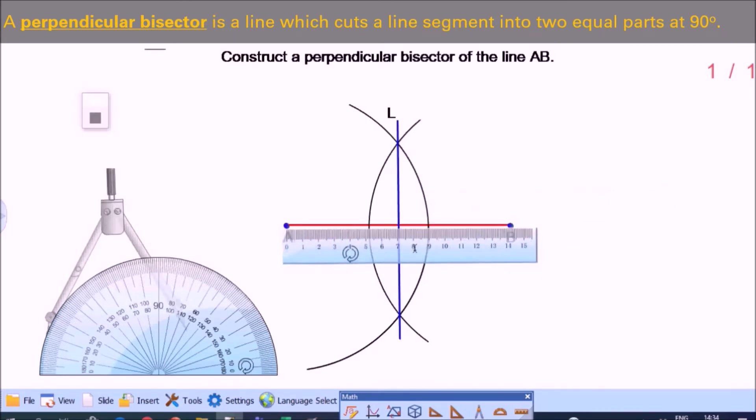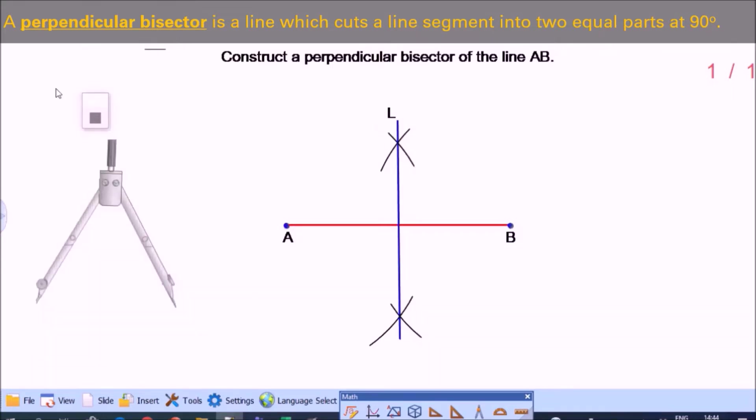It's 7 centimeters from A to the middle. So on the right side, B to the middle is 7 centimeters. So yes, it cuts the line into two equal parts. And line L is also 90 degrees to AB. So it is a perpendicular bisector of the line segment AB.